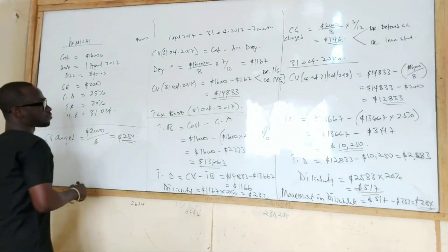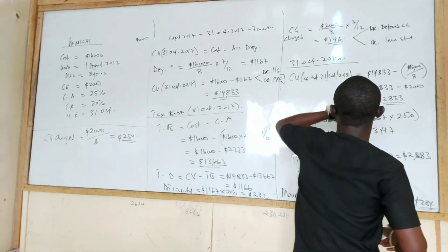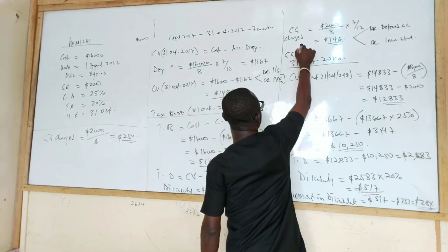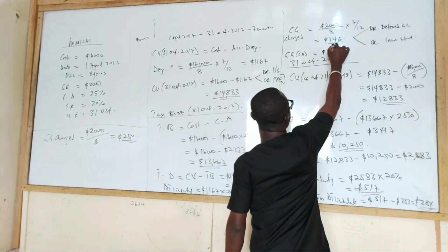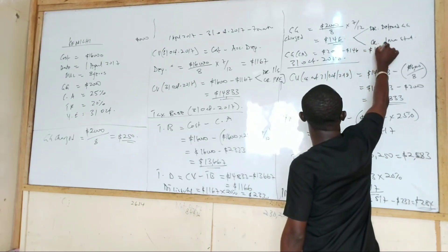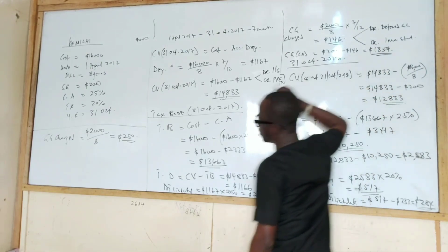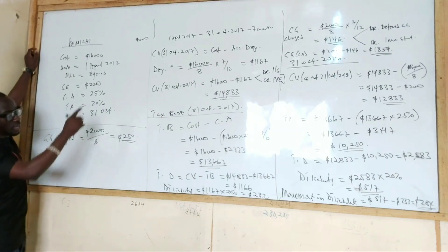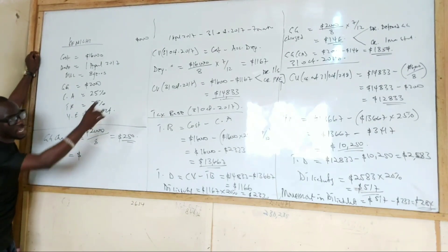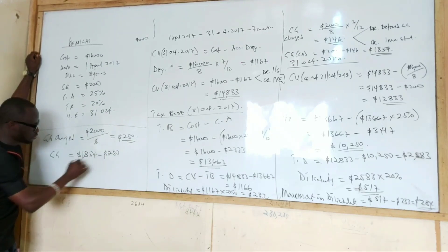I didn't even bring the current amount of the grant here. Government grant current amount will be 2,000 year minus 1,46 — that gives us 1,854. When I get to the balance sheet, or the statement of financial position, I will talk about it. So current amount of the grant in the second year: 1,854 minus 250.